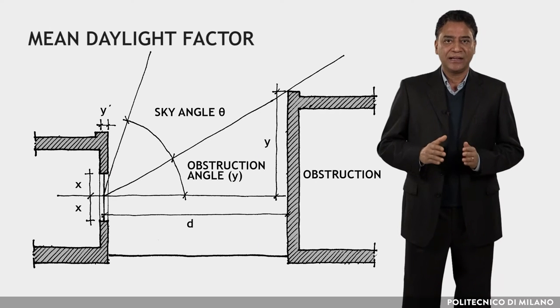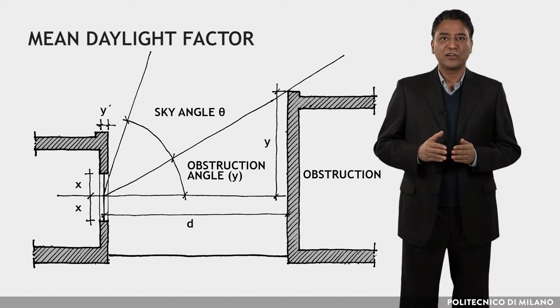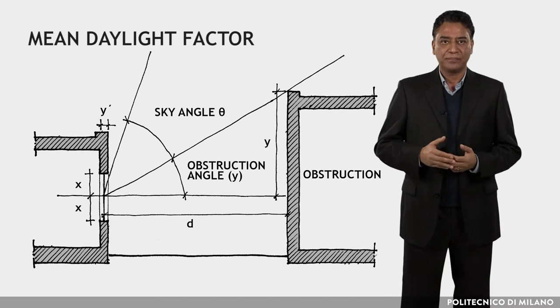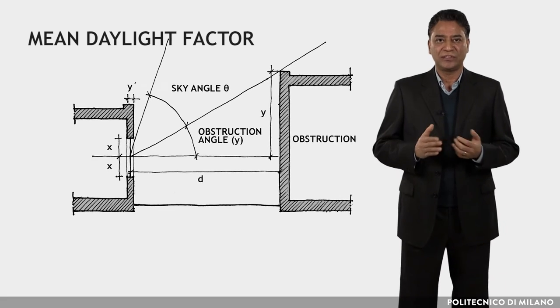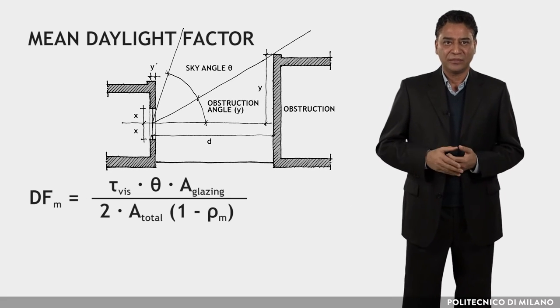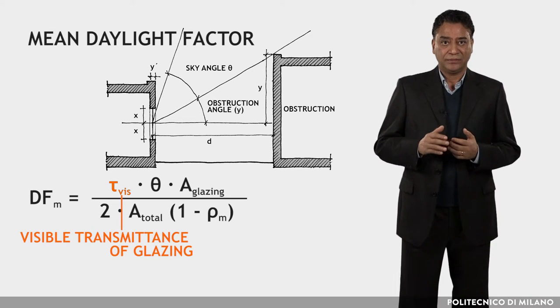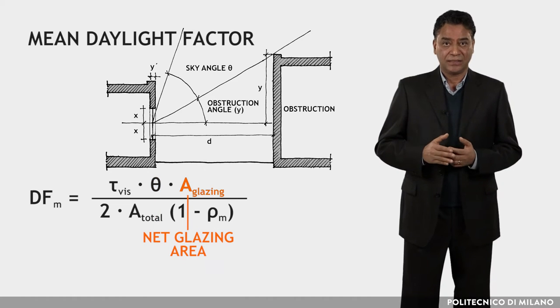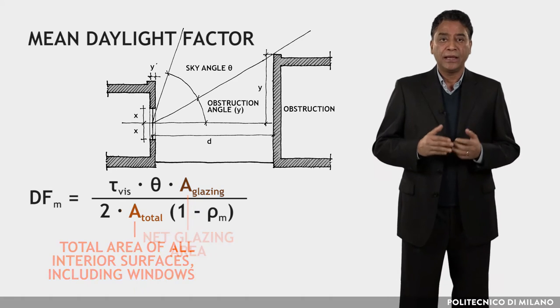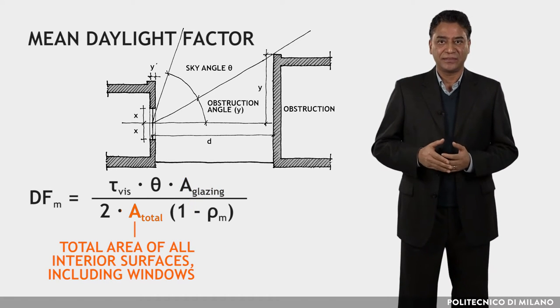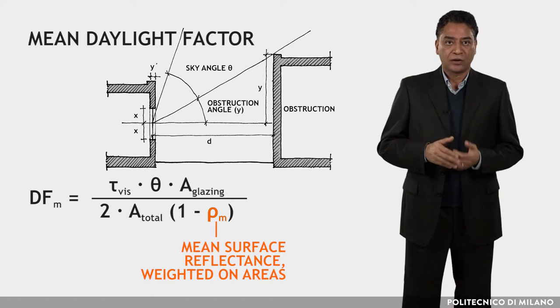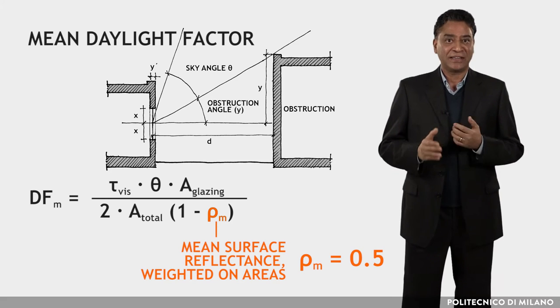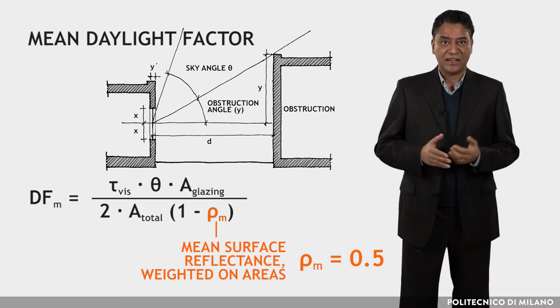The mean daylight factor of an enclosed space is defined as the mean value of daylight factors measured at the level of the working plane by a grid of sensors extended to the whole space. It can be estimated with this formula where tau is visible transmittance of glazing, theta is the sky angle, A_glazing is net glazing area, A_total is the total area of all interior surfaces including windows, and rho_m is the mean surface reflectance weighted on area, generally taken as 0.5 as a first approximation.